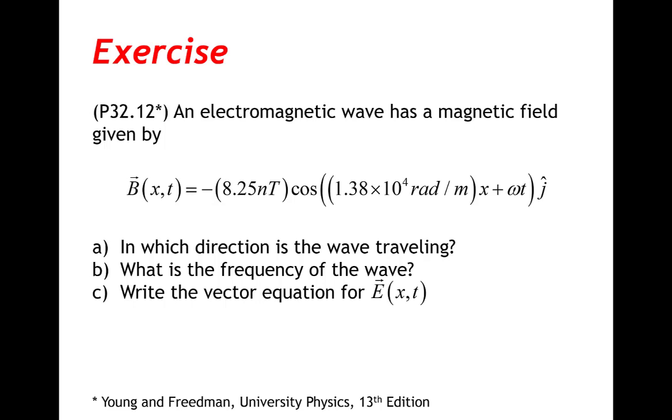An electromagnetic wave has a magnetic field given by minus 8.25 nanoteslas cosine of 1.38 times 10 to the fourth radians per meter x plus omega t in the y direction.